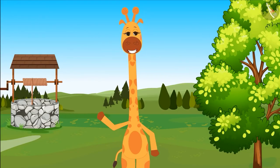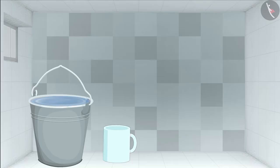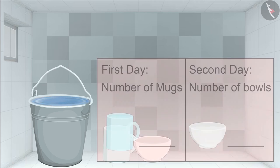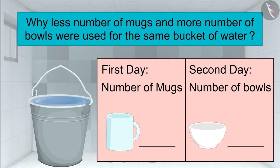Children, now it's your turn to do one such activity. Take a bucket and fill it with water using a mug. And then, fill the same bucket with water with a bowl. Make a table like this in your notebook and write down the number of mugs and bowls used to fill the bucket. Can you tell why less number of mugs and more number of bowls were used for the same bucket of water? Think and share the answer with your family and friends.